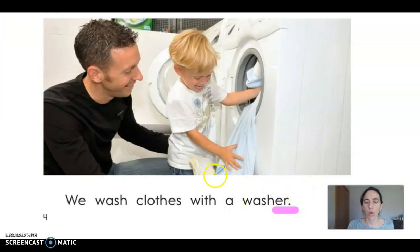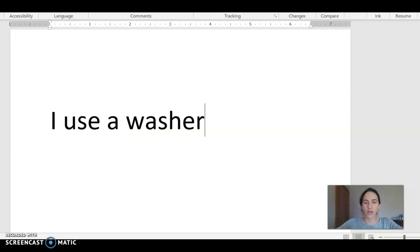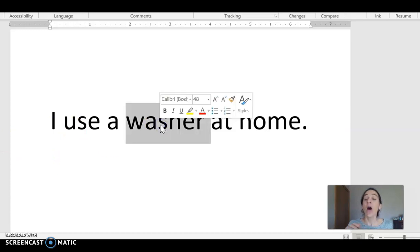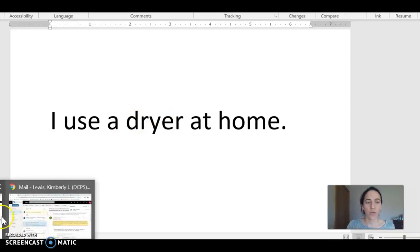I want to do a washer. So on my paper, I'm going to write, I use a washer. I want to expand my sentence. I want to say, I use a washer at home. Now I want to do something different. I use, after I wash my clothes, I use a dryer at home. You can fill those in and write in your pictures.